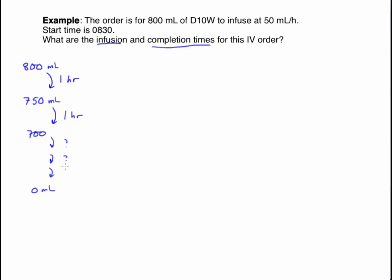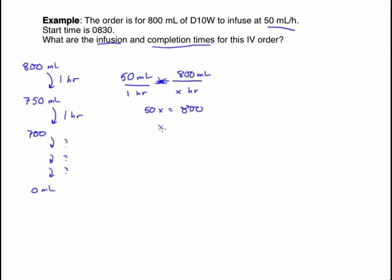We count the number of hours it will take. Using a proportion: if 50 milliliters go in every 1 hour, how many hours until 800 milliliters are infused? Set up the proportion with an equal sign in between and cross-multiply: 50x = 1 × 800. Dividing both sides gives x = 16. The infusion time is 16 hours.